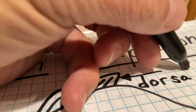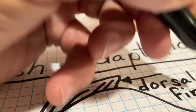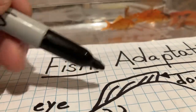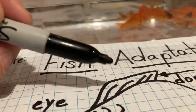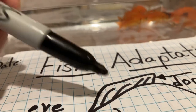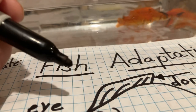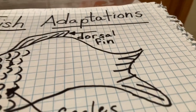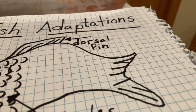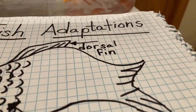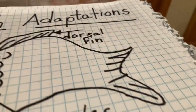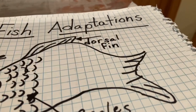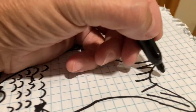Think about what this adaptation might help the fish do — it helps it go straight so it's not swimming on its side. That's the dorsal fin. Sorry my fish drawing doesn't quite look like a fish, but Miss Courtney is coming back to teach us some more art!